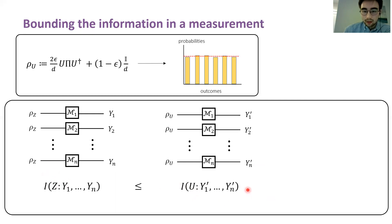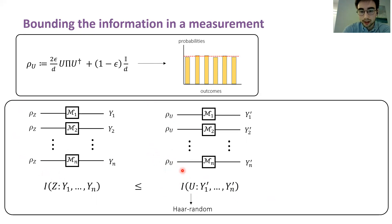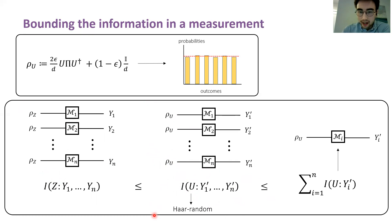It holds due to properties of the Haar measure that this mutual information quantity is upper bounded by a different mutual information quantity, which essentially corresponds to replacing the ensemble with one that's uniformly Haar-random with respect to the choice of the unitary operator. You might be concerned that this random variable is not discrete — rest assured that mutual information is well-defined for arbitrary random variables. Then, because the measurements are non-adaptive, the measurement outcomes are conditionally independent of each other, and we can conclude an upper bound by sub-additivity of mutual information.